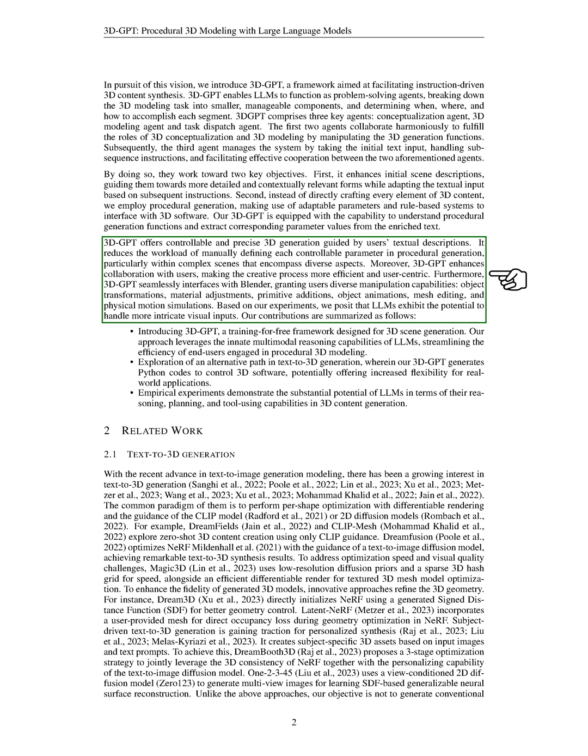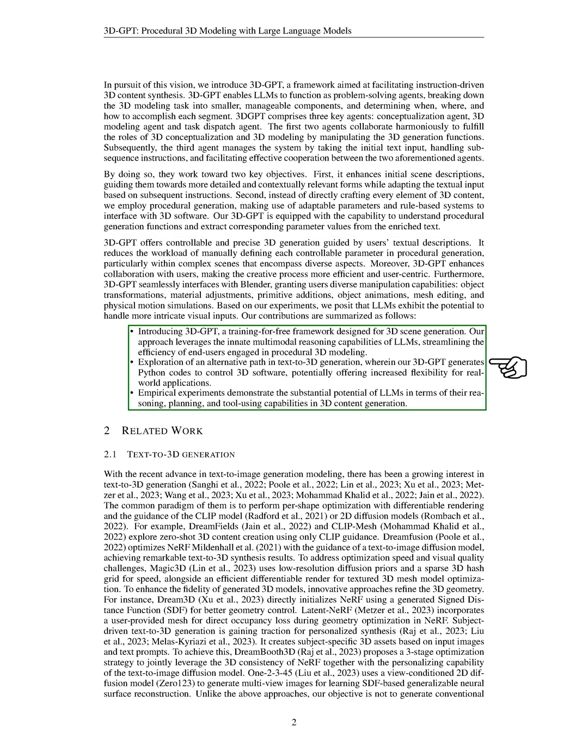Based on our experiments, we believe that LLMs have the potential to handle more complex visual inputs. Our contributions can be summarized as follows. We introduce 3D GPT, a training-free framework designed for 3D scene generation. We explore an alternative path in text-to-3D generation, where our 3D GPT generates Python codes to control 3D software, potentially offering increased flexibility for real-world applications. Our empirical experiments demonstrate the substantial potential of LLMs in terms of their reasoning, planning, and tool-using capabilities in 3D content generation.